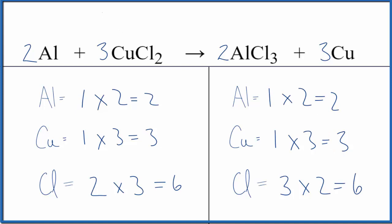If we wanted to write the states, both aluminum and copper are solids—they're solid metals. Copper II chloride is soluble in water, so it'll be aqueous, just like aluminum chloride is aqueous as well.